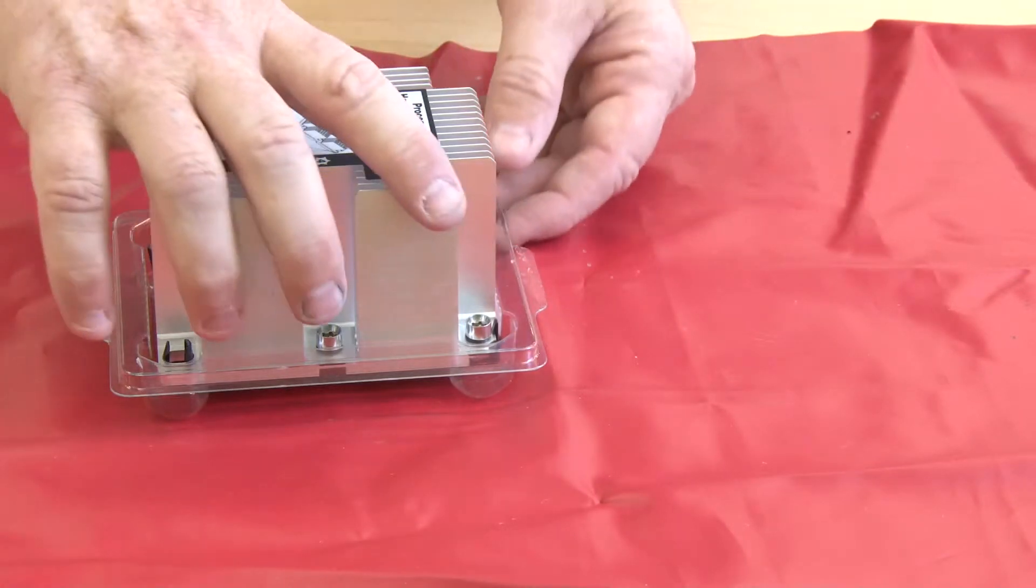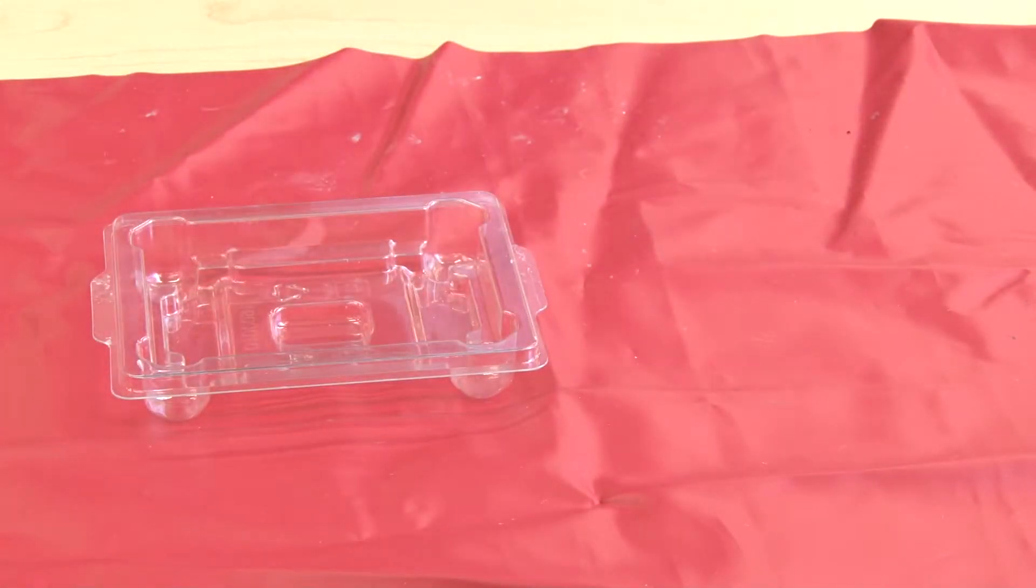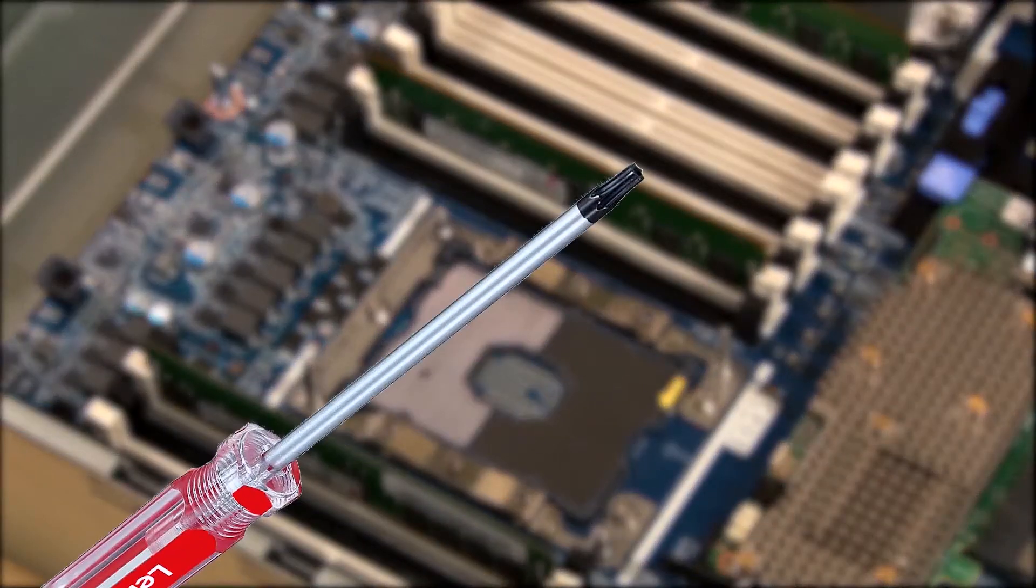Lift the newly assembled processor heat sink module up by the heat sink to remove it from the package. You will need a Torx T30 screwdriver.